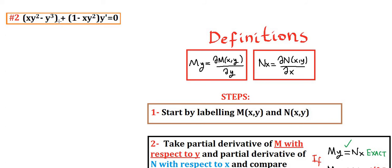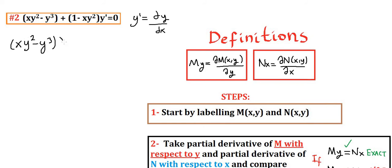We were given: xy² − y³ + (1 − xy²)y′ = 0. Our first step is to convert y′ into dy/dx. If we multiply the whole equation by dx after converting y′ into dy/dx, we obtain (xy² − y³) dx + (1 − xy²) dy = 0. So here step 1 is to convert y′ into dy/dx and multiply the whole equation by dx.